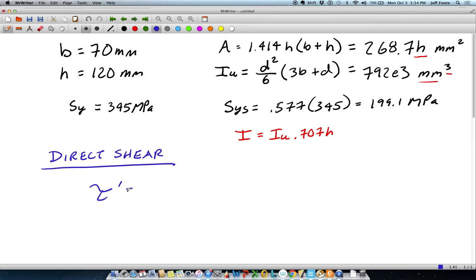We'll give it symbol tau prime, and its value is just the shear force divided by the weld area. And the shear force will give us 10,000 Newtons. The weld area is 268.7 times H. And that does have units of stress, megapascals.